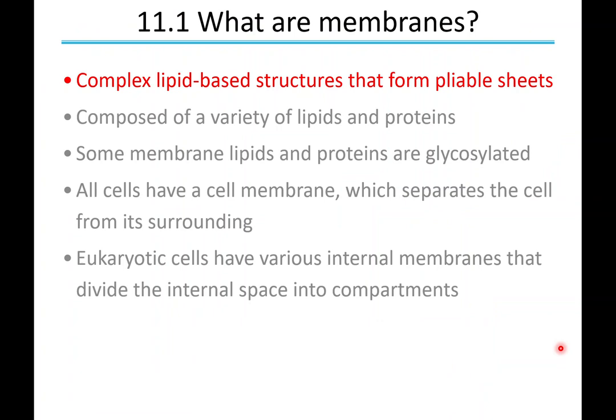Moving on to chapter 11: what are membranes? They're complex lipid-based structures that form pliable sheets, composed of a variety of lipids and proteins. Some membrane lipids and proteins are glycosylated, meaning they have sugars attached. All cells have a cell membrane — that's what makes them a cell — separating the interior from its surroundings. Eukaryotic cells also have internal membranes that divide the cell into organelles.